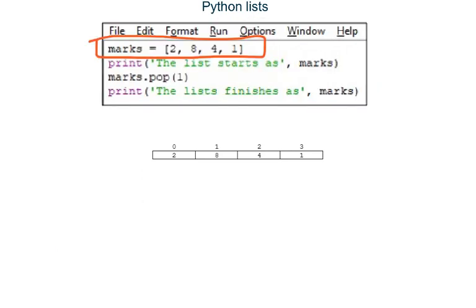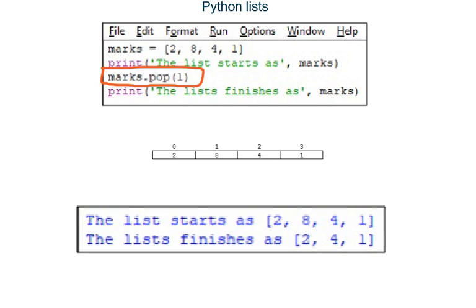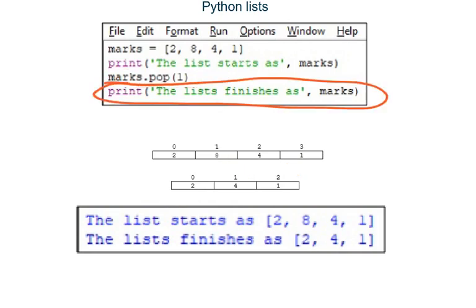The final program again starts by creating a list named marks with four elements, then outputs what the list looks like at the start. Line three uses pop to remove element one out of the list, so the list goes from four elements to three elements. The original element two becomes element one, and the original element three becomes element two. The final line of code outputs the list at the end of the program.